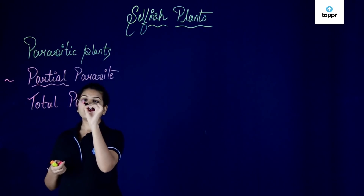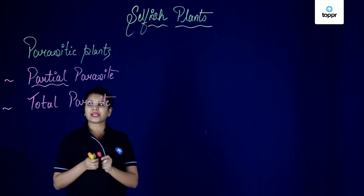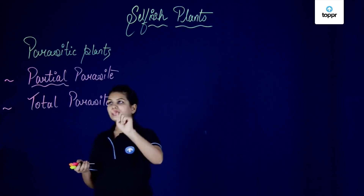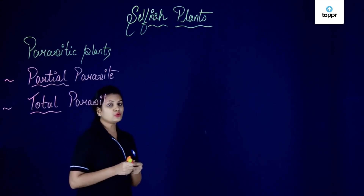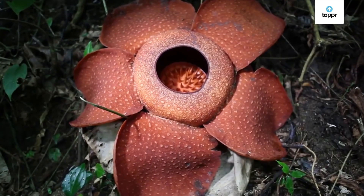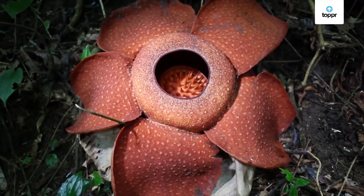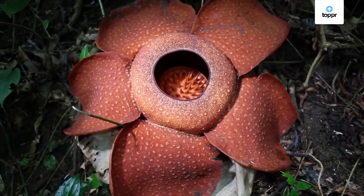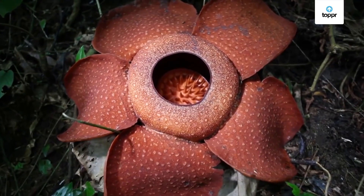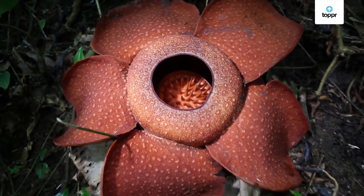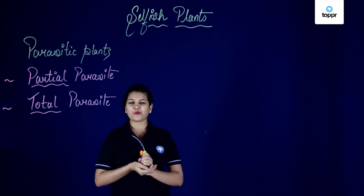So, plants which cannot prepare their food are called parasitic plants because they are dependent upon other plants — either partially or totally. A partial parasite example is mistletoe; a total parasite example is dodder. But there is also rafflesia, which has the largest flower and is called the corpse flower because it smells really bad — to attract insects for pollination. Rafflesia also produces thread-like structures on the host plant and absorbs all the nutrition from there. It is said that rafflesia also snatches some genes from the host plant, making it top the list of all parasitic plants.